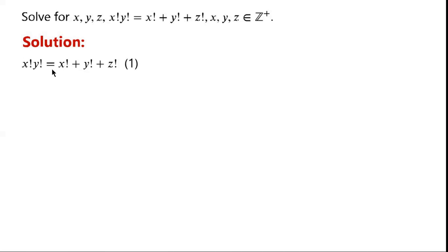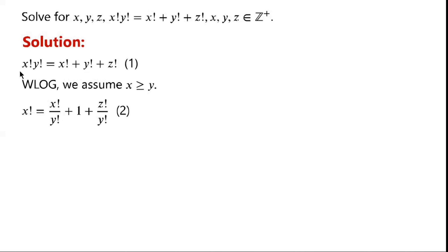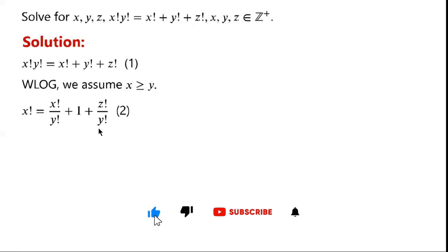Note that x and y are symmetrical. Without loss of generality, we assume that x is greater than or equal to y. Now we divide equation 1 by y factorial, and we can write x factorial equals x factorial over y factorial plus 1 plus z factorial over y factorial.